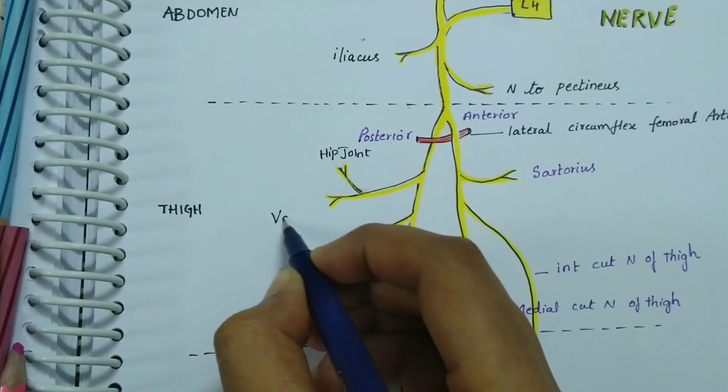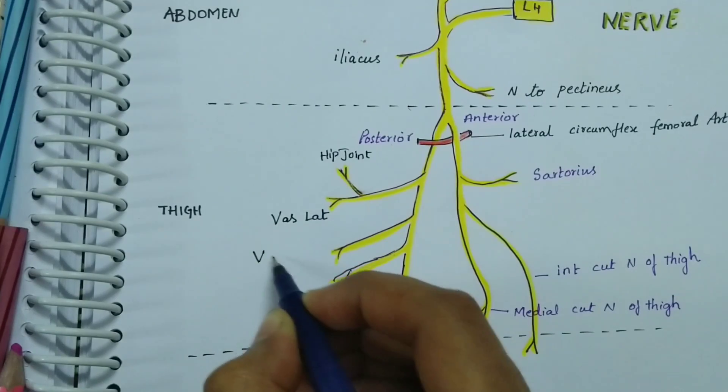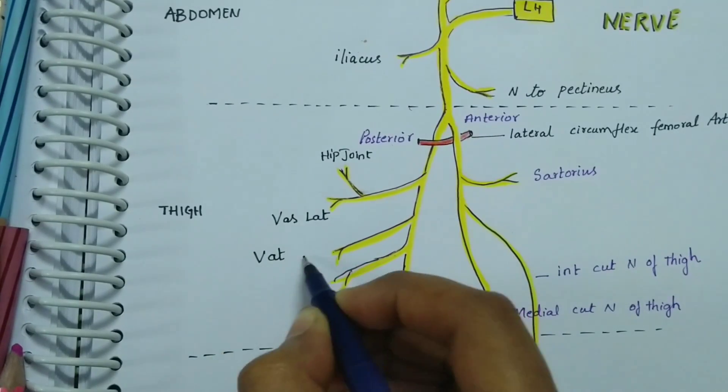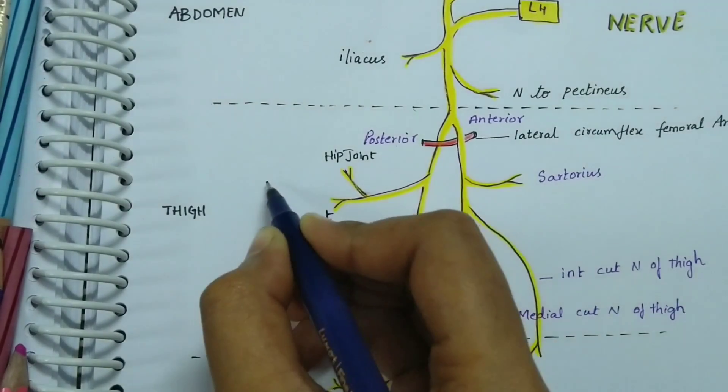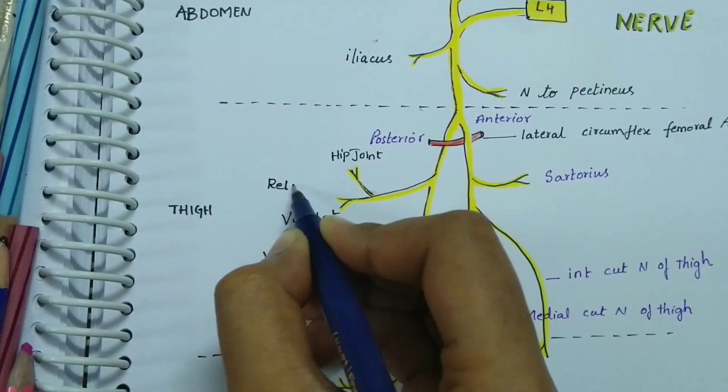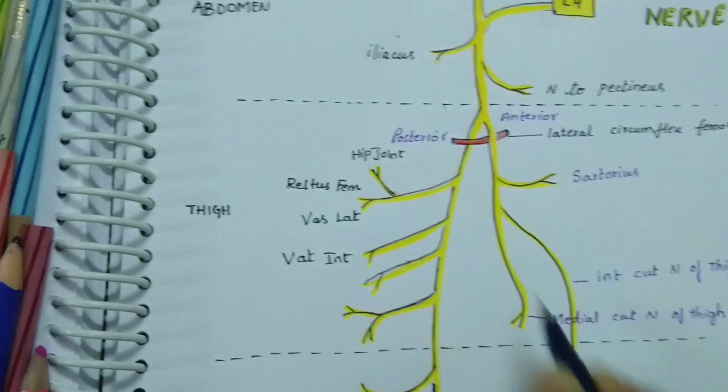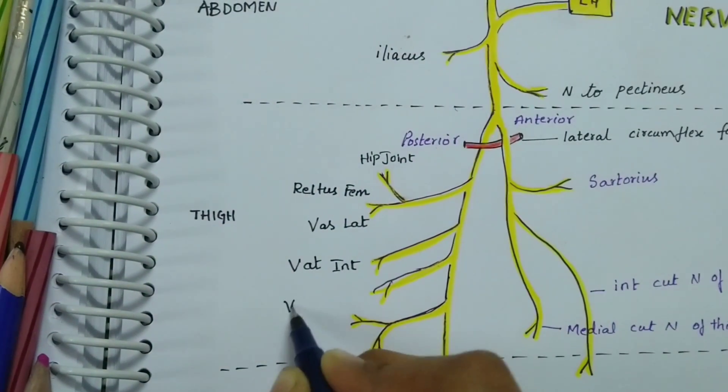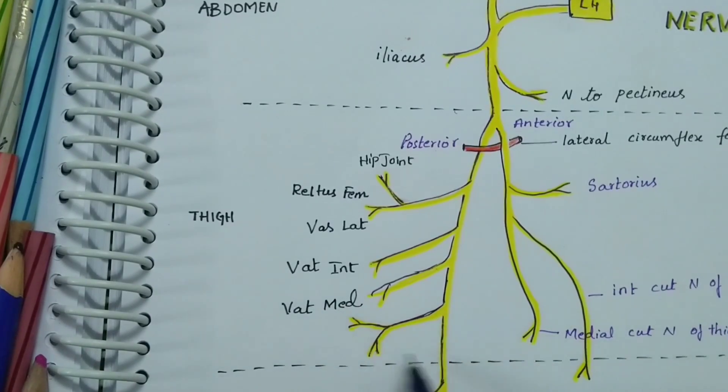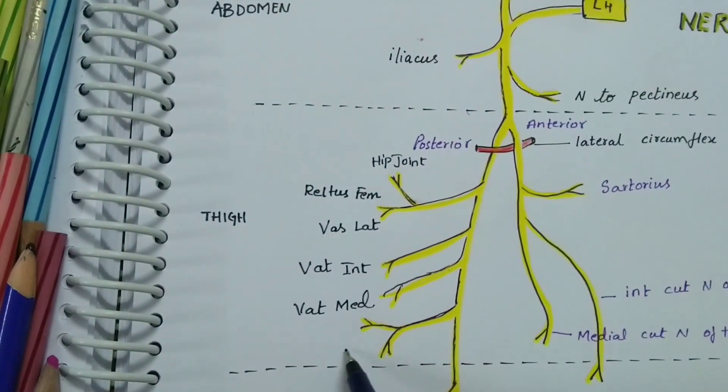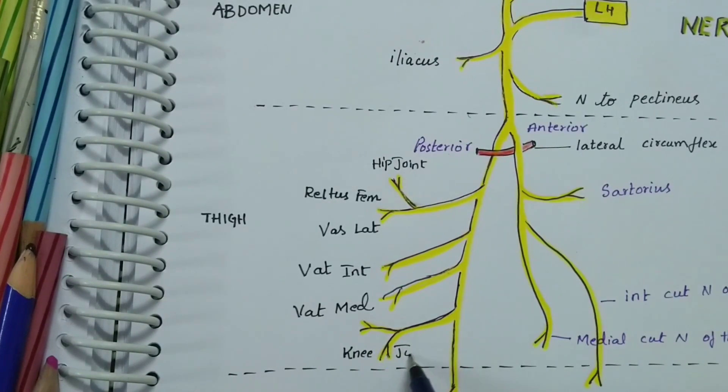A branch to the vastus lateralis, a branch to vastus intermedialis, a branch to rectus femoris, and the vastus medialis. It also gives a branch to the knee joint.